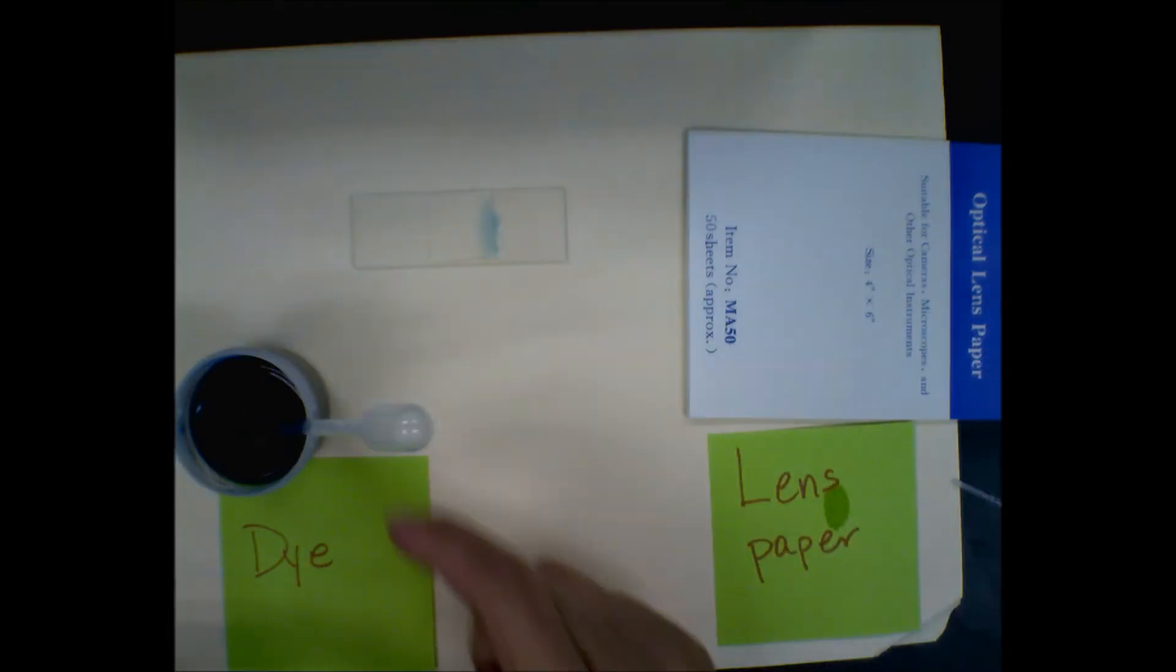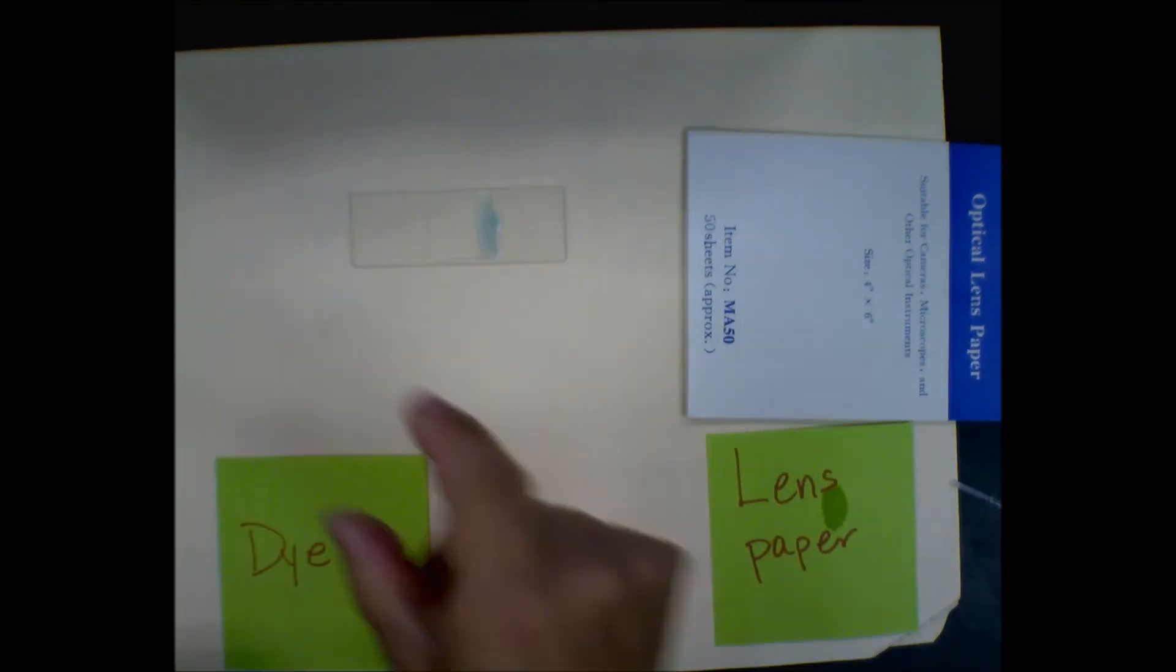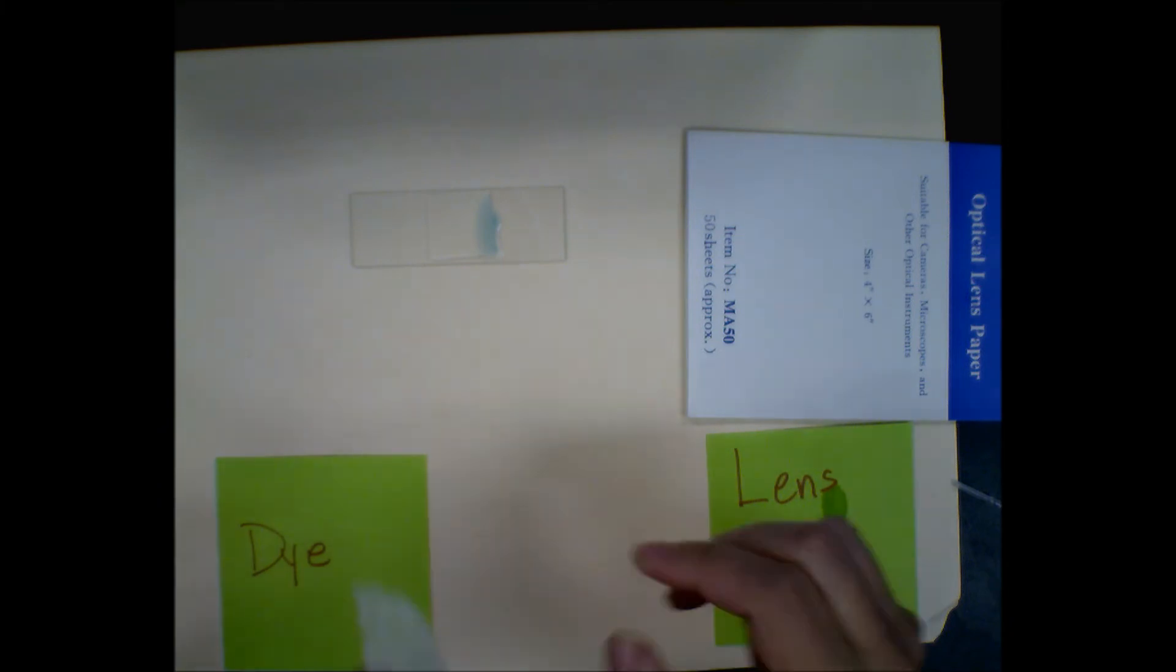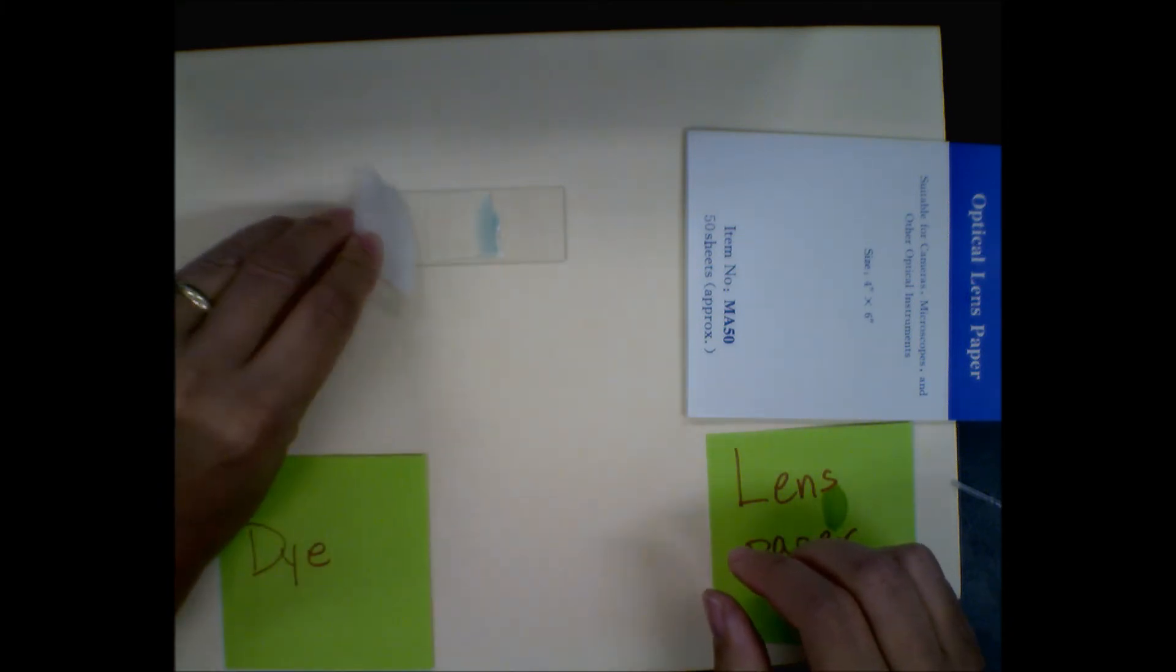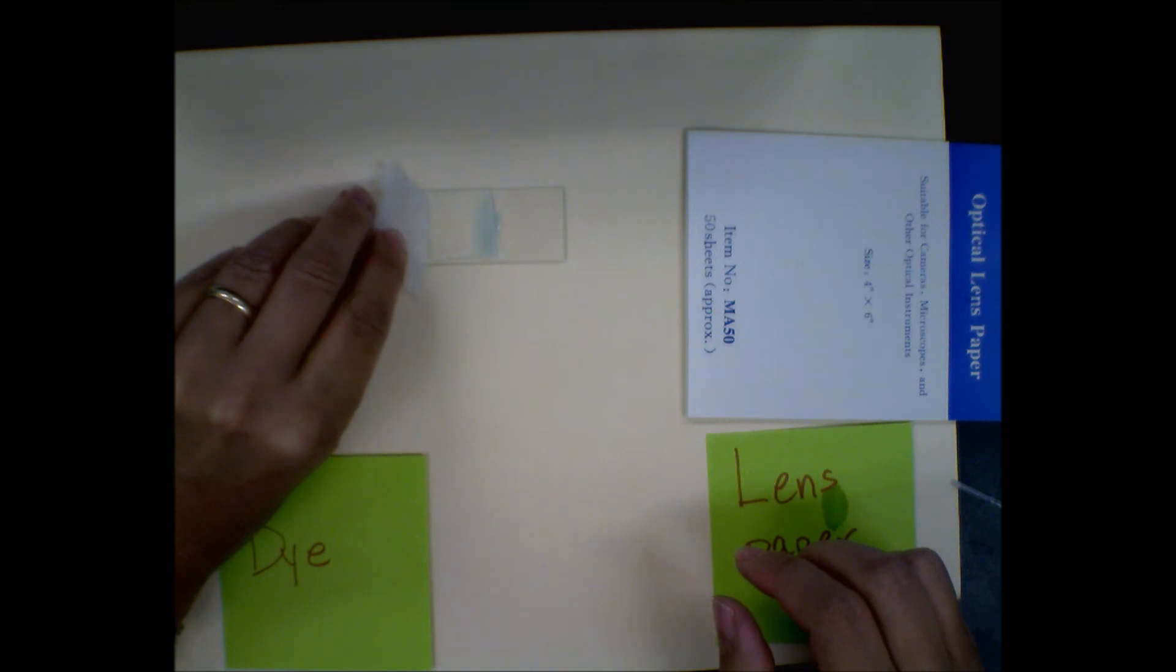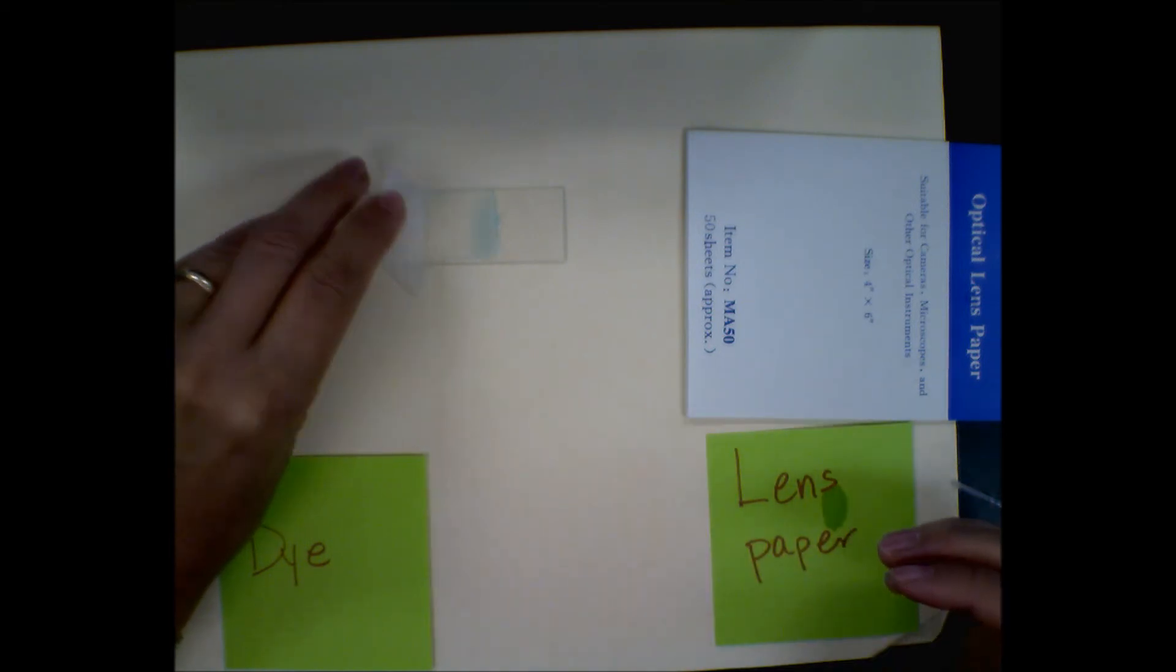You can see it started to go under but we need it to go most of the way through. Now you take the edge of your lens paper and stick it on the opposite side, and it will start to draw some of the water into the lens paper which then pulls the dye across your slide.